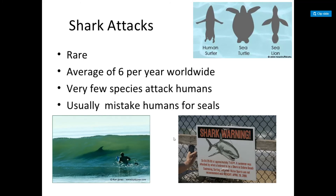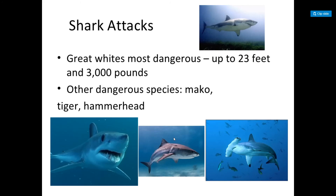Shark attacks are rare — an average of about six per year worldwide. It's usually a mistake, with sharks confusing humans for seals. Great whites are the most dangerous, at up to 23 feet and 3,000 pounds. Other dangerous species include mako sharks, tiger sharks, hammerheads, and bull sharks, which can be quite aggressive around the Gulf Coast near Galveston.